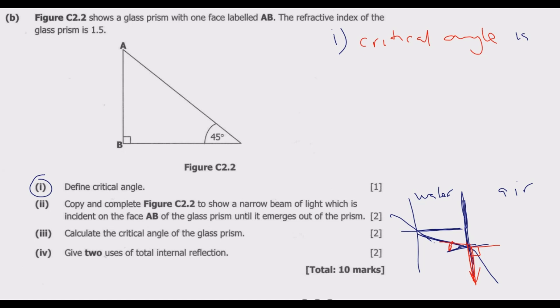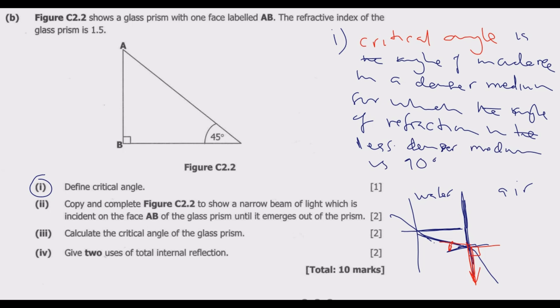So the definition is: critical angle is the angle of incidence in a denser medium for which the angle of refraction in the less dense medium is 90 degrees.